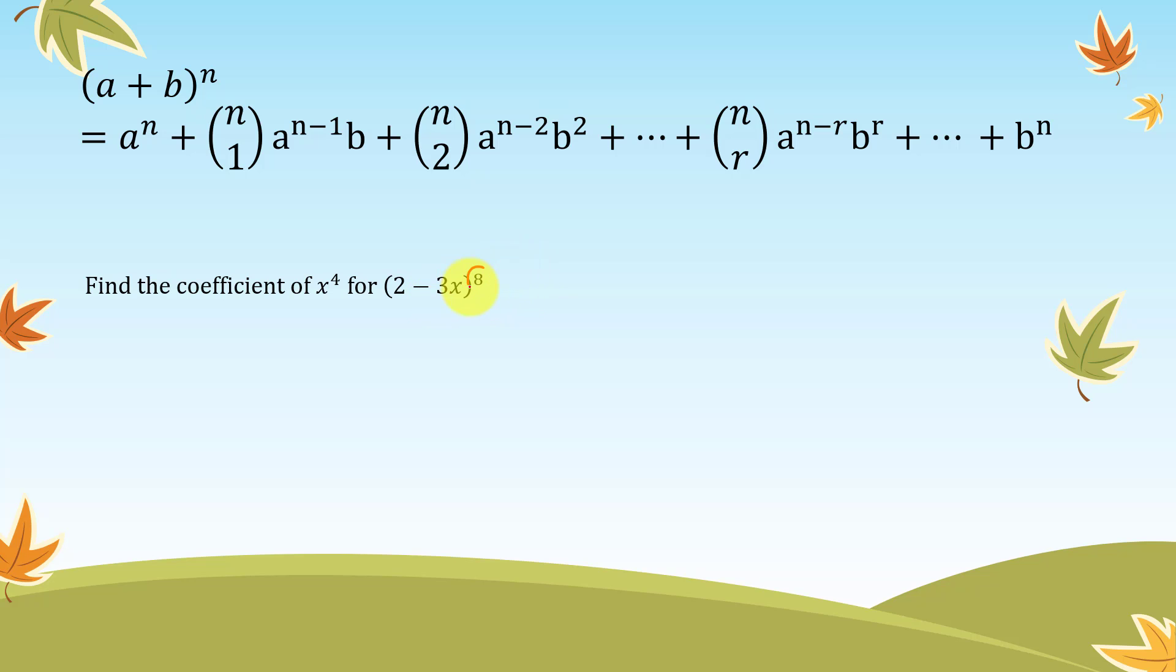Firstly, check the power for this one. As we can see, we have some positive integer. So that means to expand this, we must use the binomial expansion for some positive integer, which is the formula up here.